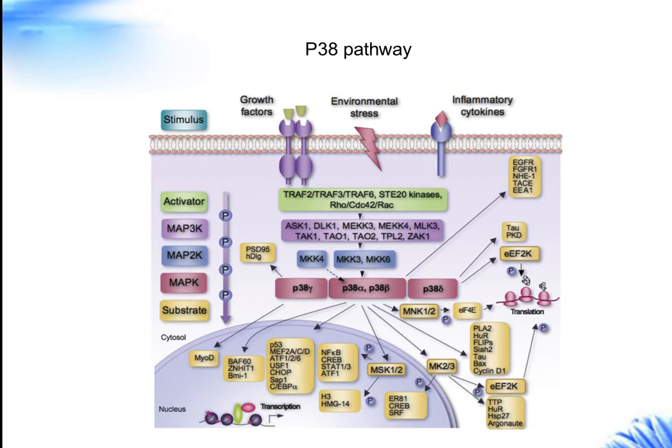The P38 pathway is the third major signaling cassette of the mitogen-activated protein kinase signaling pathway. It functions in the control of apoptosis and the release of cytokines by macrophages and neutrophils. The pathway takes its name from the family of P38 kinases, which are the MOPCs that interact with the final effectors. The P38 family members possess a TGY motif in the activation segment. Like the JNK pathway, P38 signaling is strongly activated by environmental stresses and inflammatory cytokines. Its activation contributes to inflammation, apoptosis, cell differentiation, and cell cycle regulation.